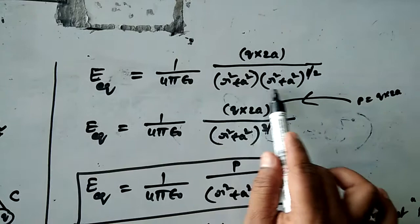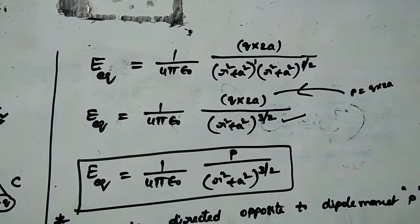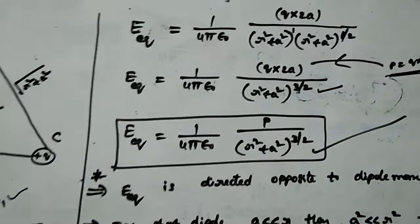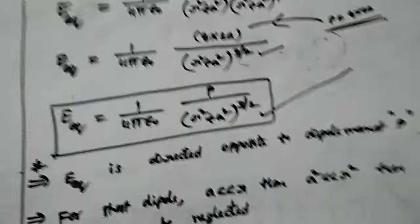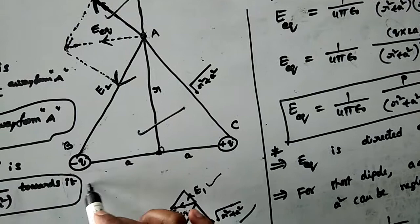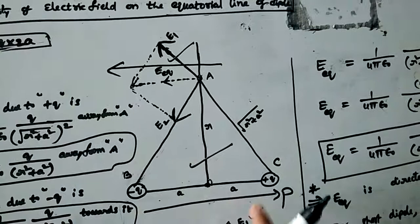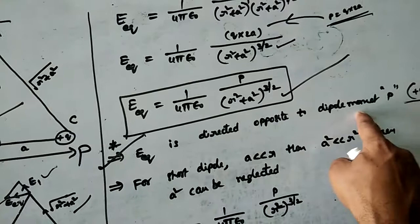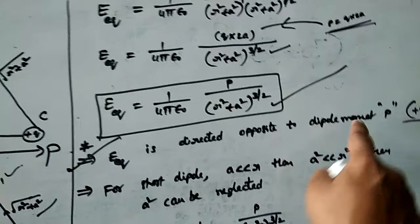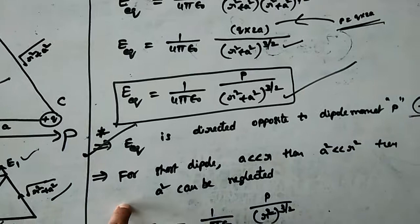The square root of r squared plus a squared is power 1 by 2, so the denominator becomes power 1 plus 1 by 2, which is 3 by 2. And q into 2a is nothing but dipole moment p. So the equatorial electric field is E equatorial equals 1 by 4pi epsilon naught times p divided by (r squared plus a squared) to the power 3 by 2. The direction of the equatorial electric field is from plus q to minus q, which is opposite to the dipole moment. Previously, the axial field was in the direction of the dipole moment, but the equatorial field is opposite to the dipole moment.